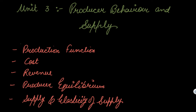Hello everyone, welcome back to the third unit. In this unit we will be starting our third unit, that is Producer Behavior and Supply. Under this, these topics are covered in your syllabus: production function, cost, revenue, producer equilibrium, supply, and elasticity of supply. So let's study the Producer Behavior and Supply unit.